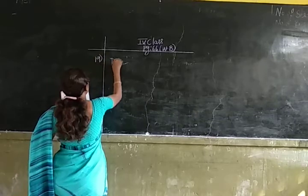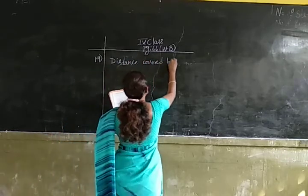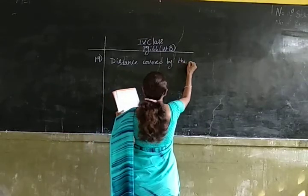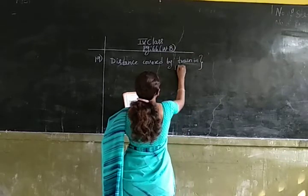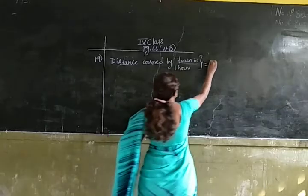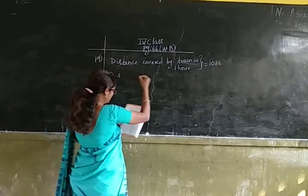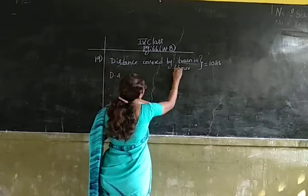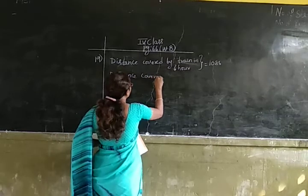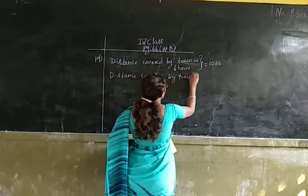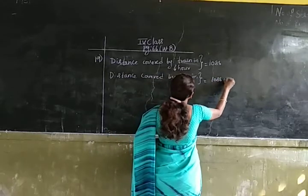Let us do the sum. Distance covered by the train in 6 hours is 1086 kilometers. Now let us find out the distance covered by the train in one hour. For that we have to use the operation division. So let us divide 1086 by 6.